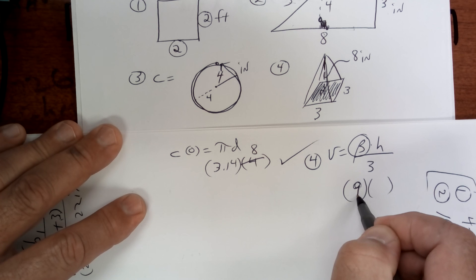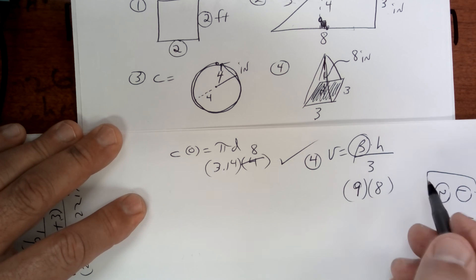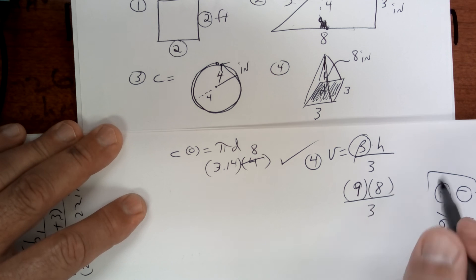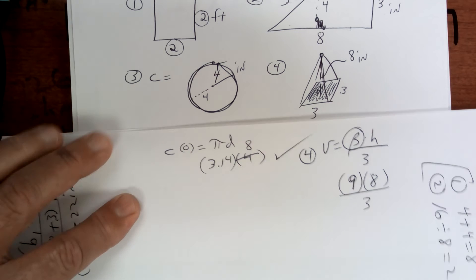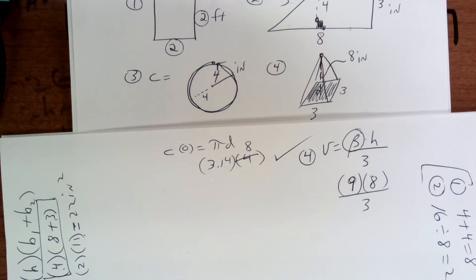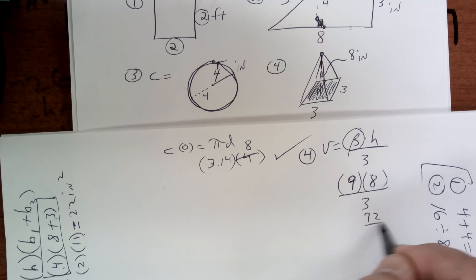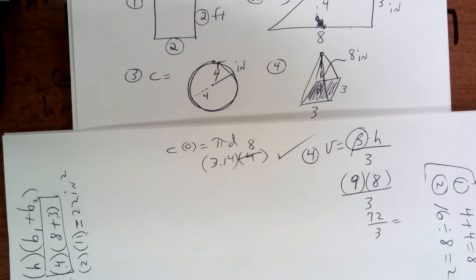And then you got to divide by 3 because it comes to a point. So it's going to be 72 divided by 3, whatever that is. Use your calculator.